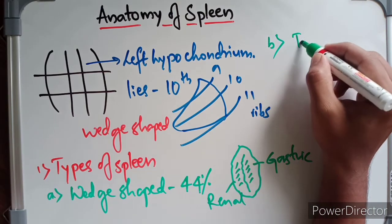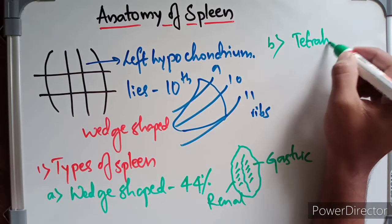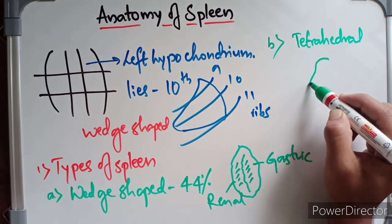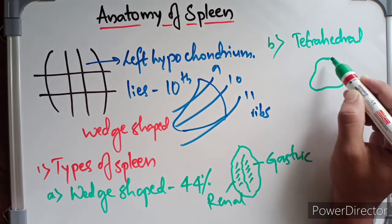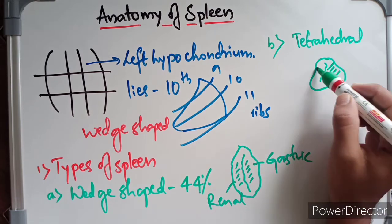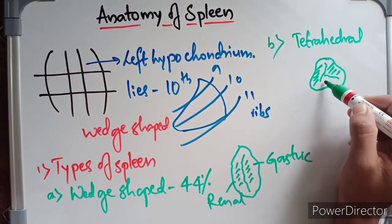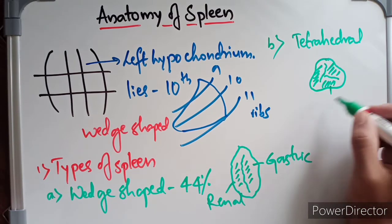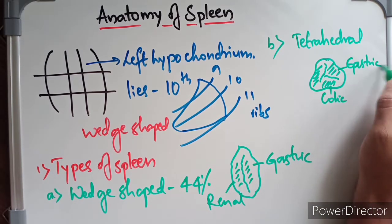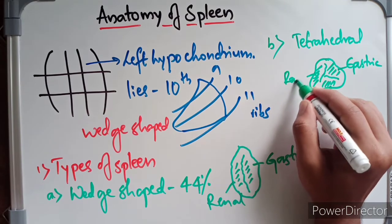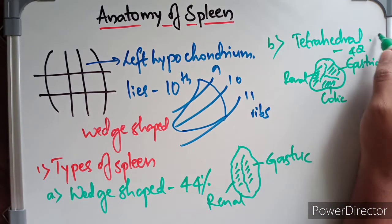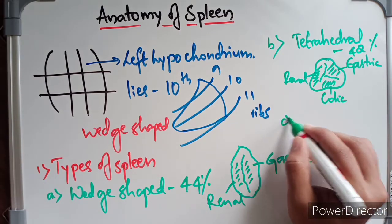The second type is tetrahedral. In the tetrahedral shape, the spleen has an intermediate border, a gastric impression, a renal impression, and a colic impression. It occurs in about 42% of individuals.